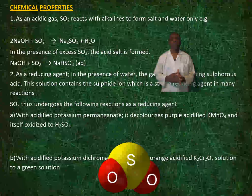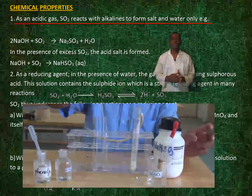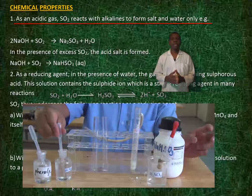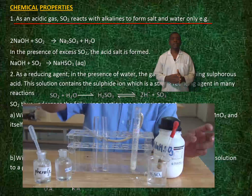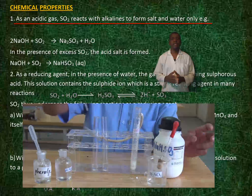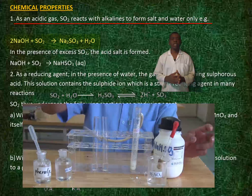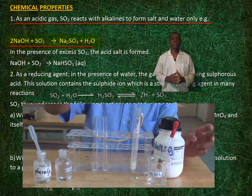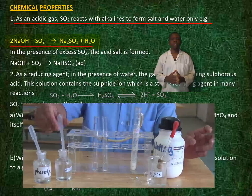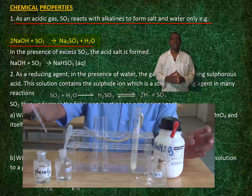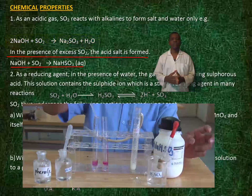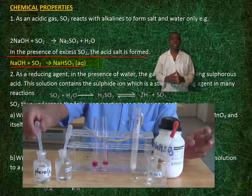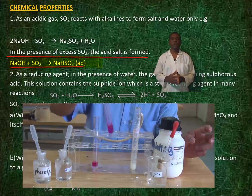Chemical properties of sulfur dioxide. As an acidic gas, sulfur dioxide reacts with alkalines to form salt and water only. For example, sodium hydroxide reacting with sulfur dioxide gives sodium sulfate and water. In the presence of excess sulfur dioxide, the acid salt is formed.